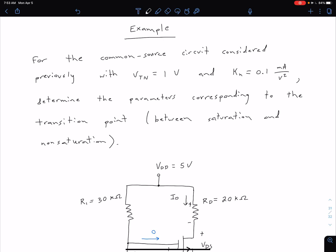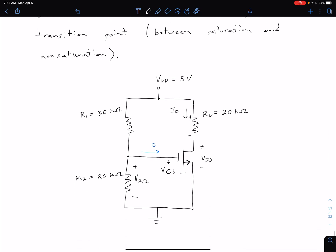Let's now take a look at an example. We're still going to work with that same common source circuit we had before, so I've copied that configuration here and we can see our resistor and voltage values for reference.